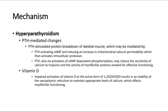Another cause of proximal myopathy is hyperparathyroidism. Possible causes of proximal muscle weakness in hyperparathyroidism are PTH-mediated changes or vitamin D defects. For PTH-mediated changes, there is PTH-stimulated protein breakdown of skeletal muscle, which may be mediated by two pathways. First, PTH activates cAMP and induces an increase in mitochondrial calcium permeability, which then activates intracellular proteases. The second mechanism involves PTH, also via activation of cAMP-dependent phosphorylation, potentially reducing the sensitivity of calcium to troponin and the activity of myofibrillar proteins needed for effective functioning.